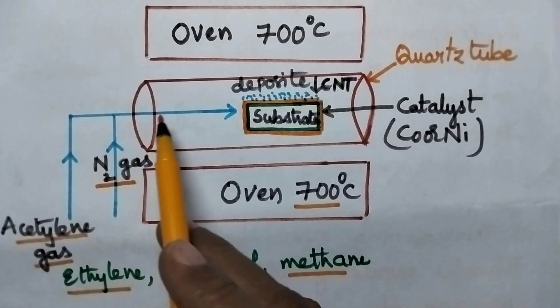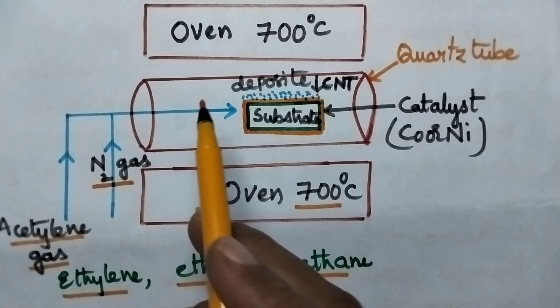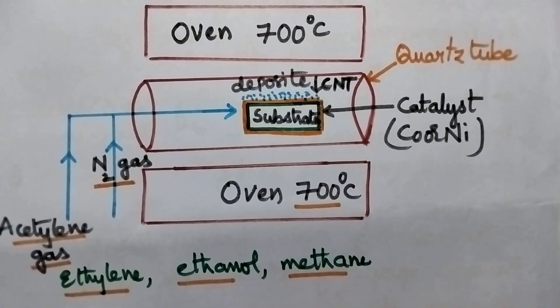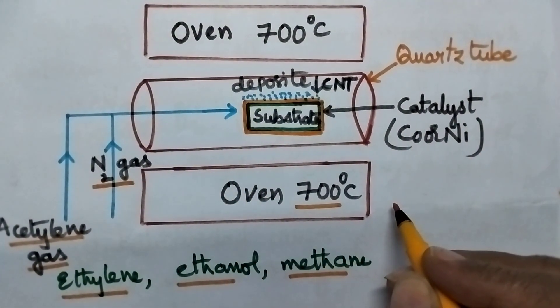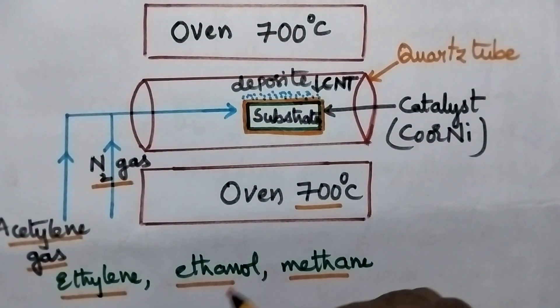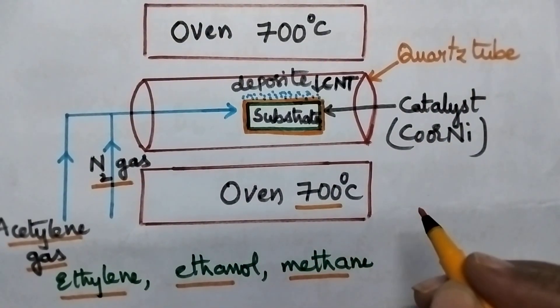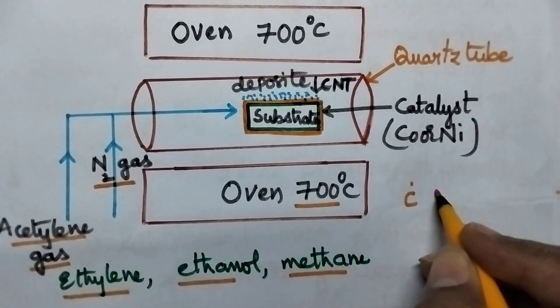When acetylene enters into the quartz tube, because of high temperature, this acetylene undergoes cleavage, or the acetylene gas will be broken into carbon atoms.